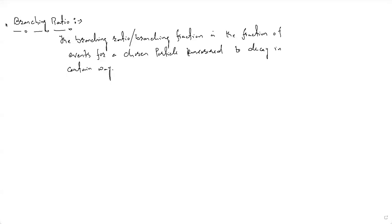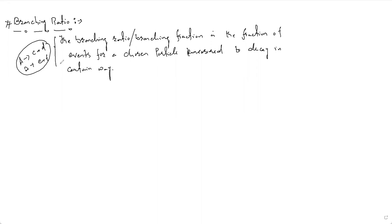Today we are going to talk about the branching ratio. The branching ratio, sometimes also called the branching fraction, is a fraction of events for a chosen particle measured to decay in a certain way. For example, if a particle can decay to C plus D, or a particle can also decay to E plus F, and so on — these are different decay modes.